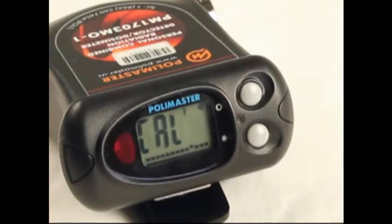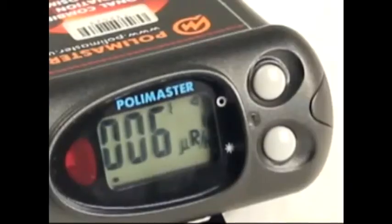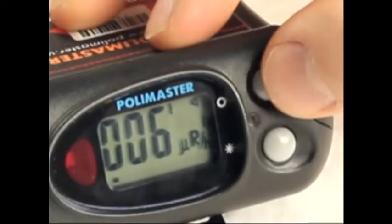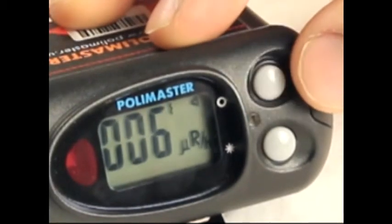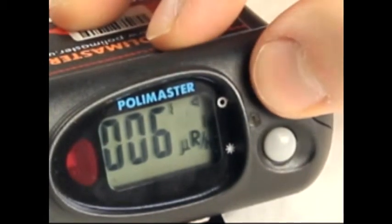Upon the completion of Calibration Mode, the detector goes into Dose Mode. To change between Dose Mode, Search Mode, and Accumulated Dose, press the Mode button. Search Mode is indicated by a flashing S on the display.